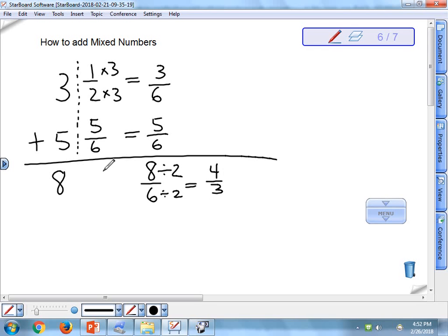So right now I have 8 plus 4 thirds. However, 4 thirds is an improper fraction. When we write our mixed number result, we cannot have an improper fraction as part of the mixed number. But we can turn 4 thirds into another mixed number by doing a division. 3 goes into 4 one time. Subtract that. I get 1 third as a result. So now we have 8 plus 1 and 1 third. Those add up to give us 9 and 1 third as our result.